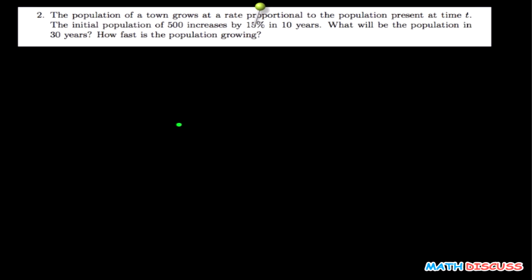Hello there. This is question 2. You are told to find the population in 30 years and how fast the population is growing, given the background information. It says the population of a town grows at a rate proportional to the population present at time t. The initial population of 500 increases by 15% in 10 years. The second statement is your initial condition, while the rest is just the question.